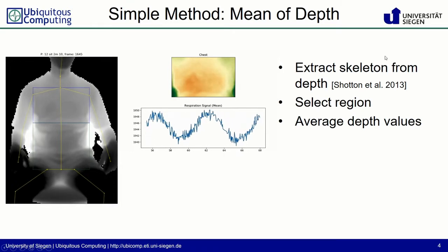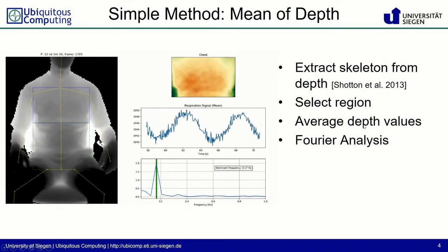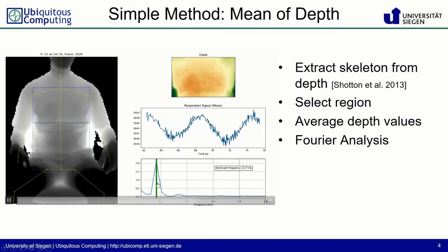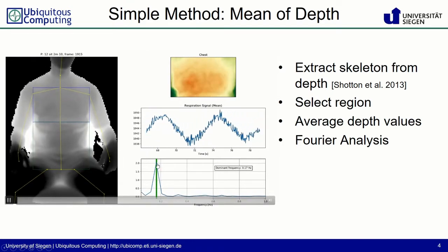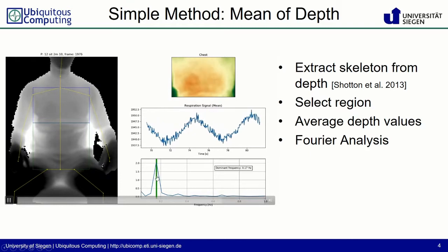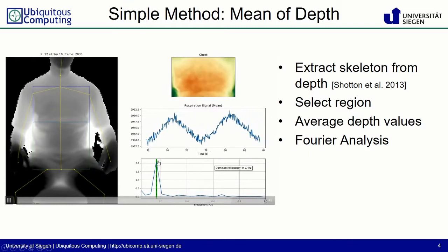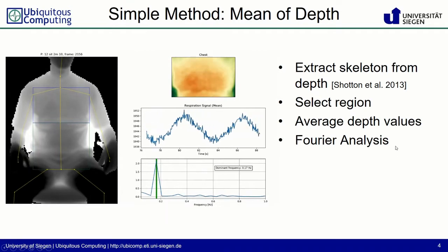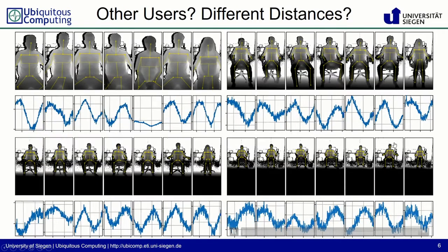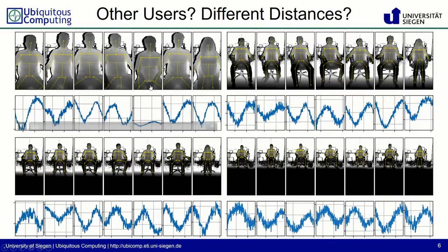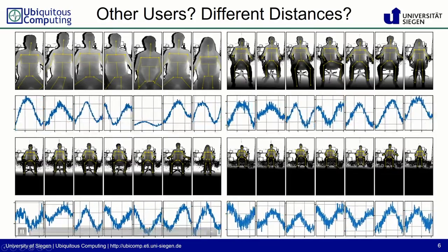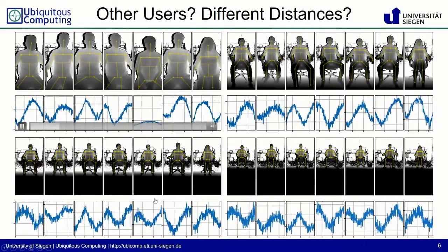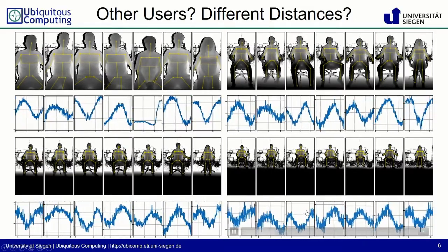With the help of a Fourier analysis we can then extract the respiratory rate. Here in green we have the ground truth frequency and the red dashed line on top is the dominant frequency detected by our method. Does it always work? Here we have different users at different distances of 1 meter, 2 meters, 3 meters, and 4 meters. We obtain a valid respiration signal that gets a bit more noisy towards higher distances.